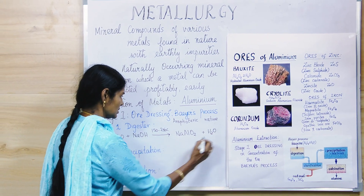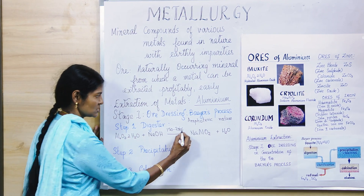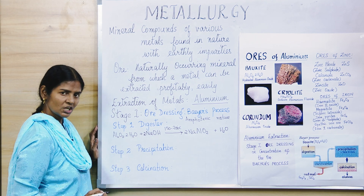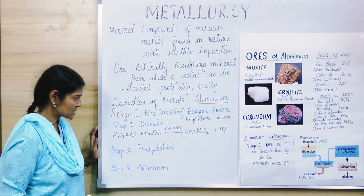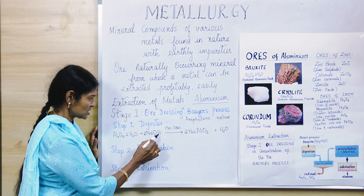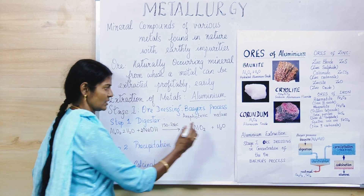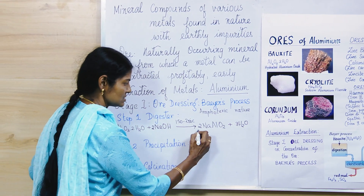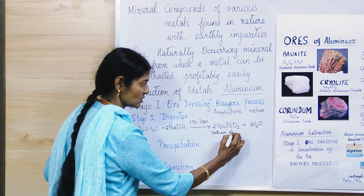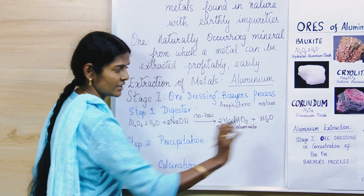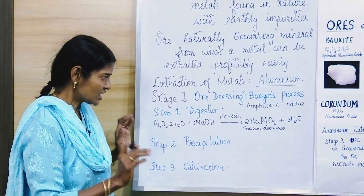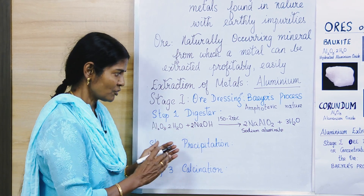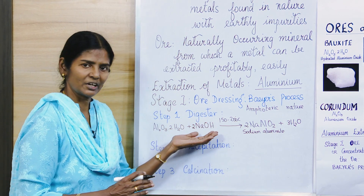To balance the digestion equation: there are two aluminium atoms, so we write two NaAlO₂ and two NaOH. For hydrogen: two times two is four, plus another two gives six, so we multiply water by three. The equation is now balanced. The function of sodium hydroxide in this step is to dissolve the oxides of aluminium to form sodium aluminate.